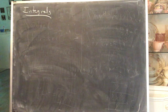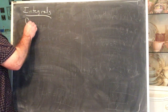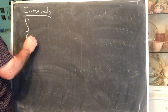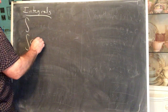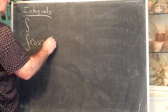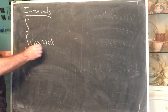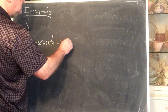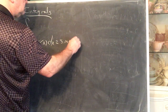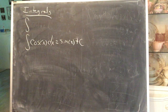We know: what is the derivative of sine? The derivative of sine is cosine. So I'm going to write the integral of cosine. If the derivative of sine is cosine, what's the integral of cosine? The integral of cosine is sine plus the constant.